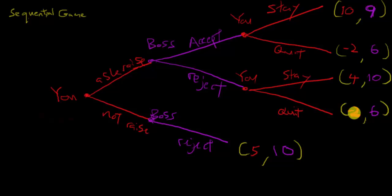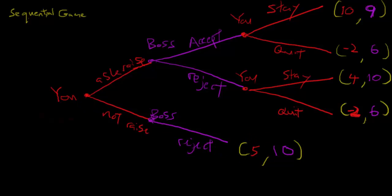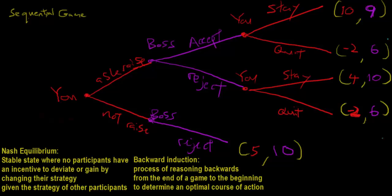For your payoffs, we said you'd rather stay with no raise than quit. So when you ask for a raise, get rejected, and stay, that number should be higher than quitting — but lower than getting the raise (10), and also lower than 5, since you never asked and avoided the cost of negotiating. Negotiating is costly and only pays off if you get the raise. These numbers are meaningful in relation to each other.